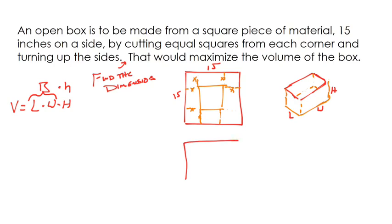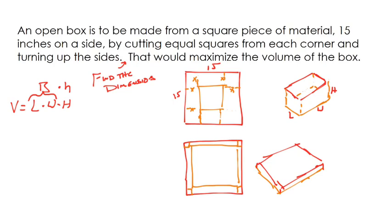We could have a situation like this where the little squares we cut out are little bitty squares. But what that's going to leave us with is a really wide box that only comes up a little bit right. Hopefully we're kind of picturing this. So you might have a situation like that.